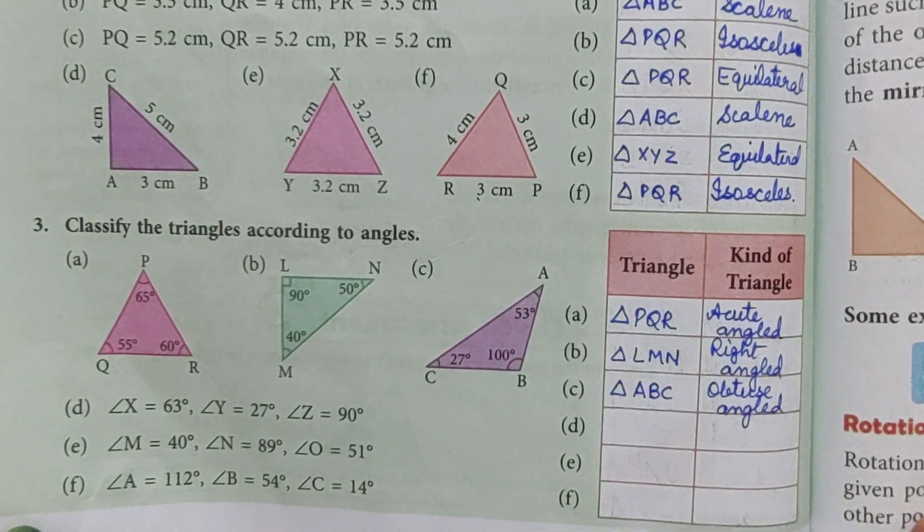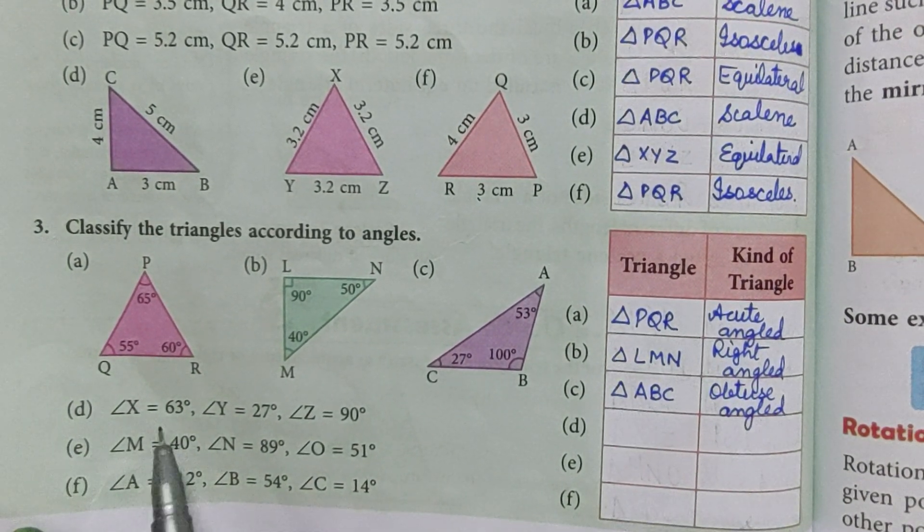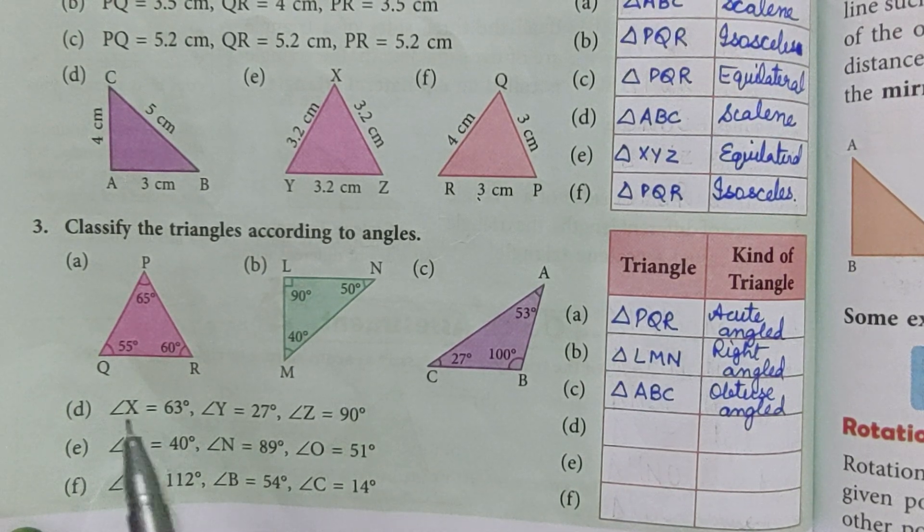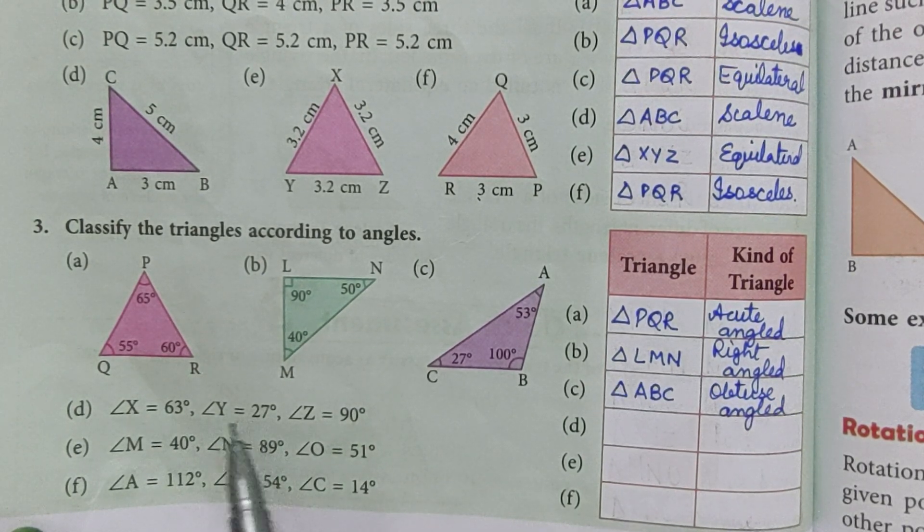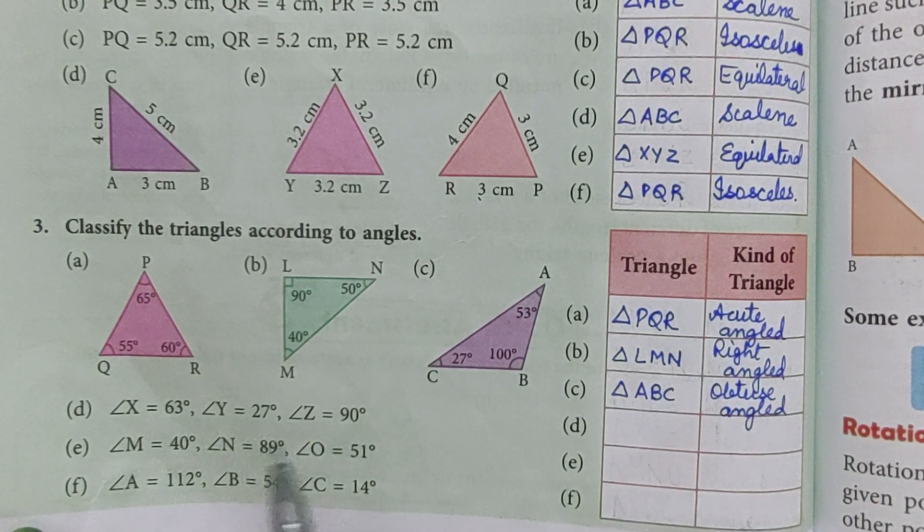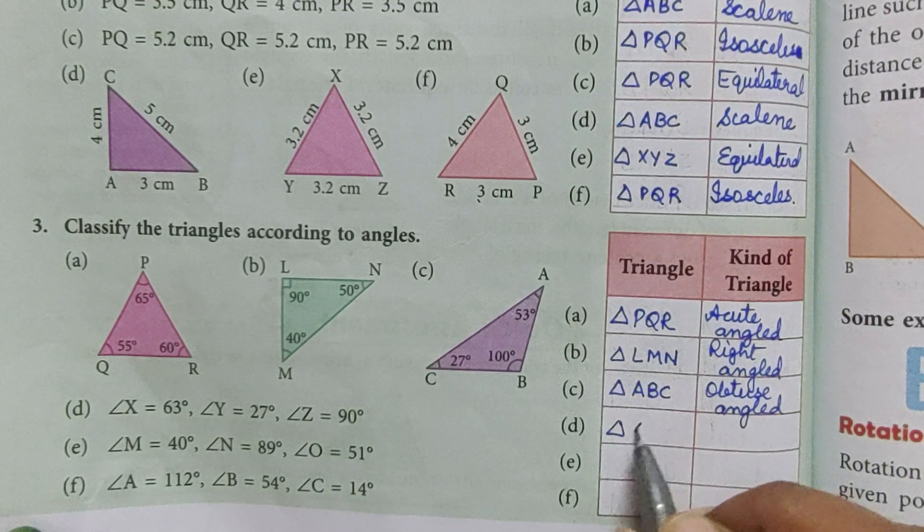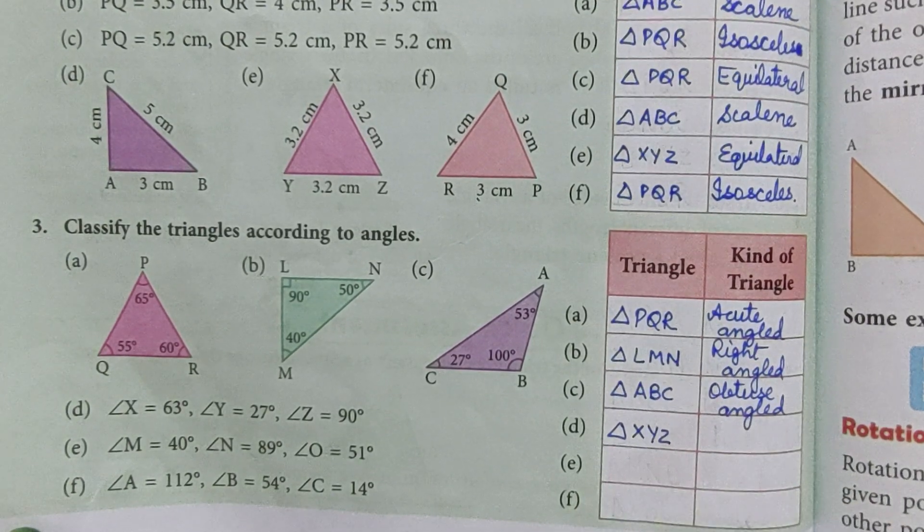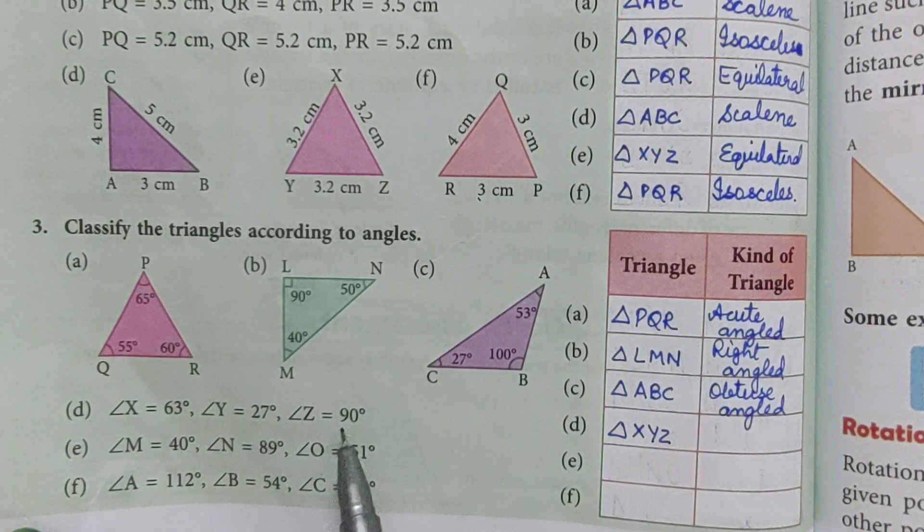Now part D, only measures are given. Angle X is 63, angle Y is 27, and angle Z is 90 degrees. So the name of triangle is triangle XYZ. Two angles are acute, one is right, so it is right angled.